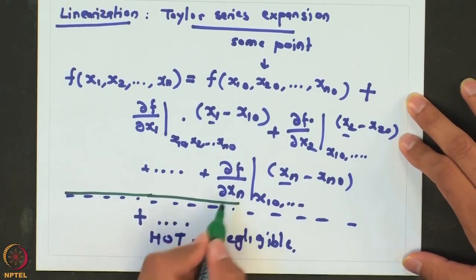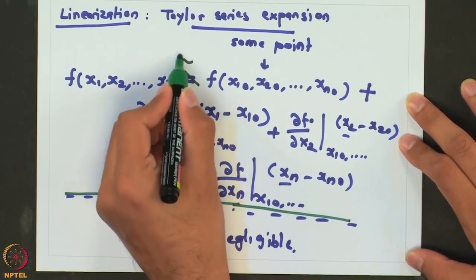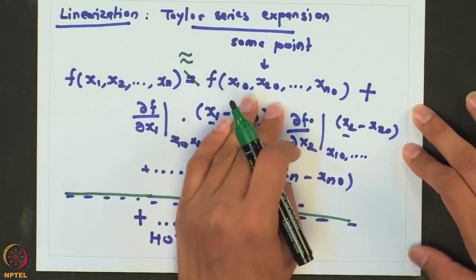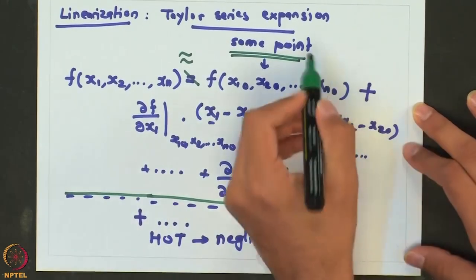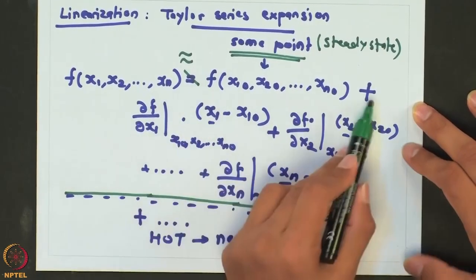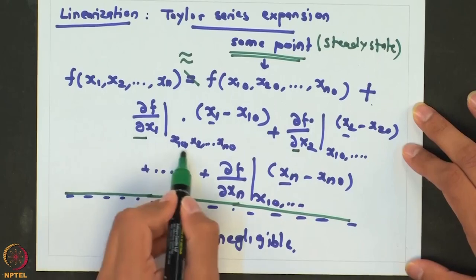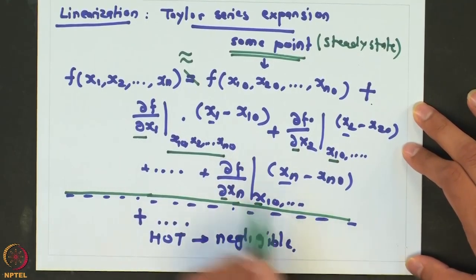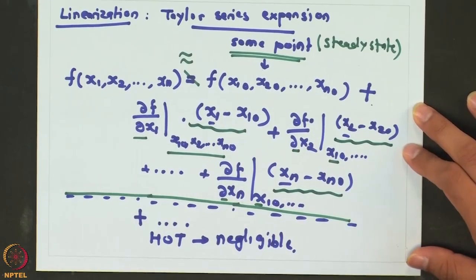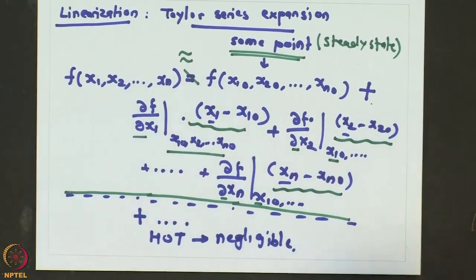So if we consider only up to the first-order terms, we replace the equality with an approximation sign. What we are doing is approximating any non-linear function as its value at some point — which in our case would typically be a steady state — plus first-order derivatives evaluated at the steady state times the deviations from the steady state. So automatically we have obtained all the deviation variables when we linearize a system. Let us now try to do this Taylor series expansion based linearization for our example. Our non-linear function was α√h.